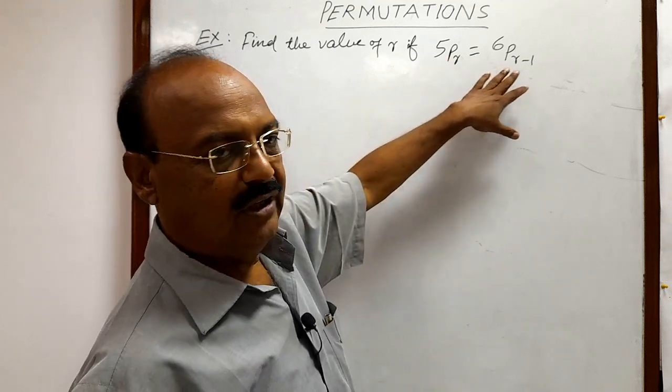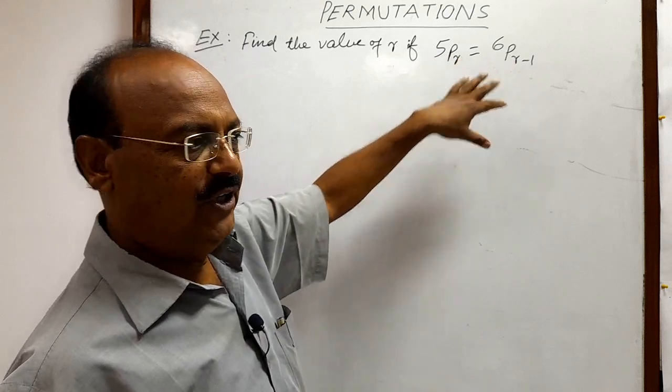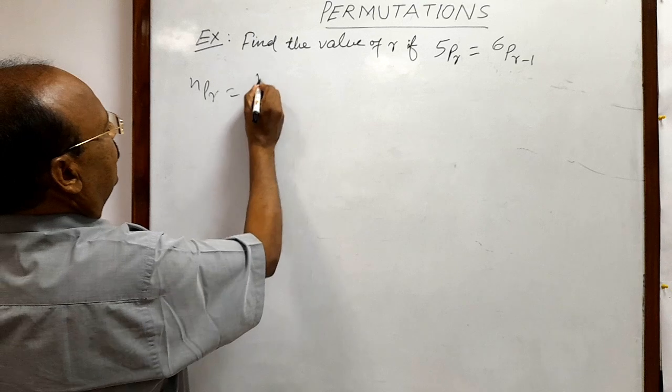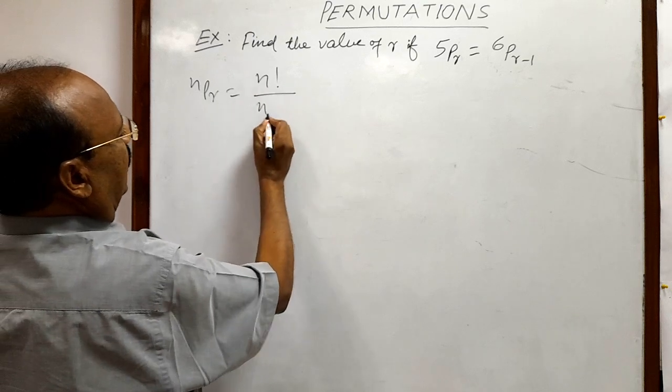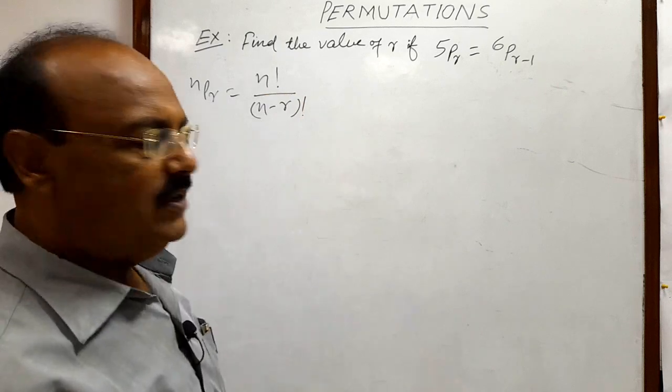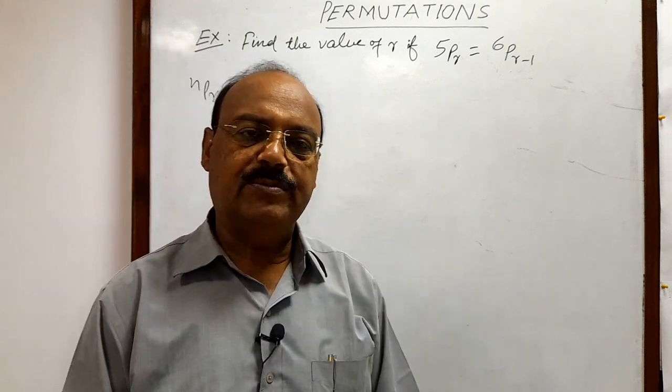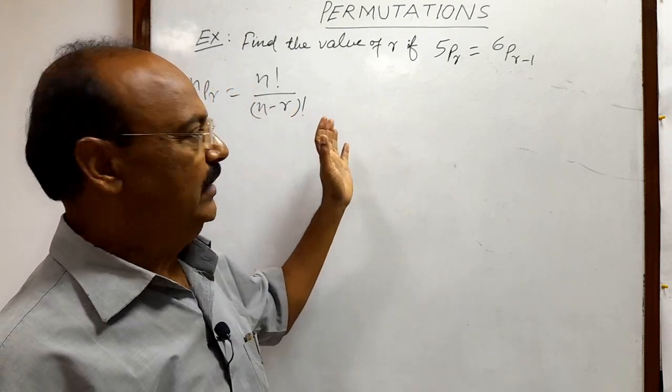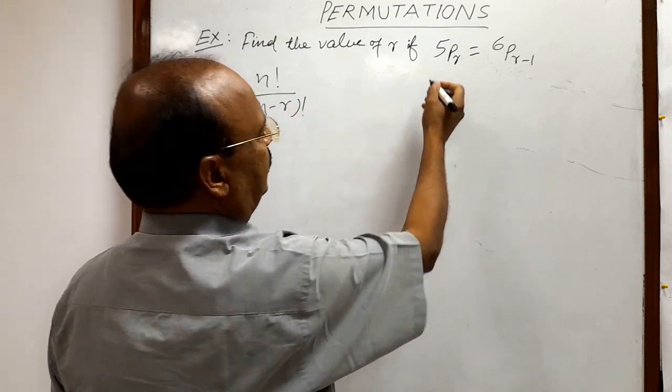For solving this question, we will use the formula of permutation which is nPr is equal to n factorial by (n minus r) factorial. In the previous videos, we have discussed so many times about factorial notations, so you can understand it very easily. Let us solve it.